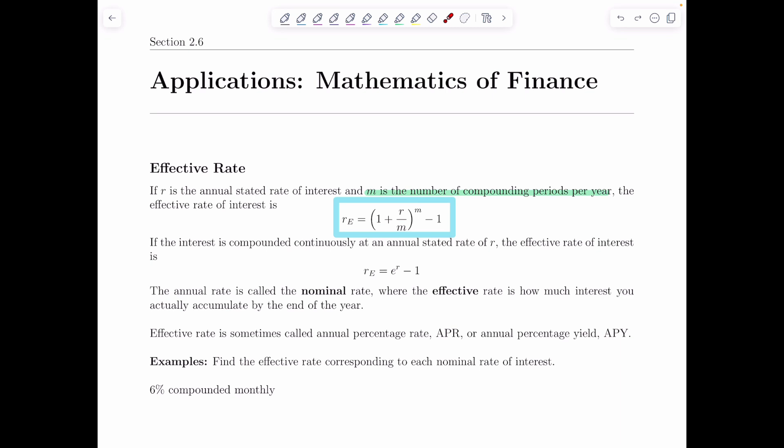If the interest is compounded continuously at an annual stated rate of R, then the effective rate of interest is given by E raised to the R minus one. So we use a different formula for compound, just like we use a different formula for compound interest. The annual rate is called the nominal rate, where the effective rate is how much interest you actually accumulate by the end of the year.